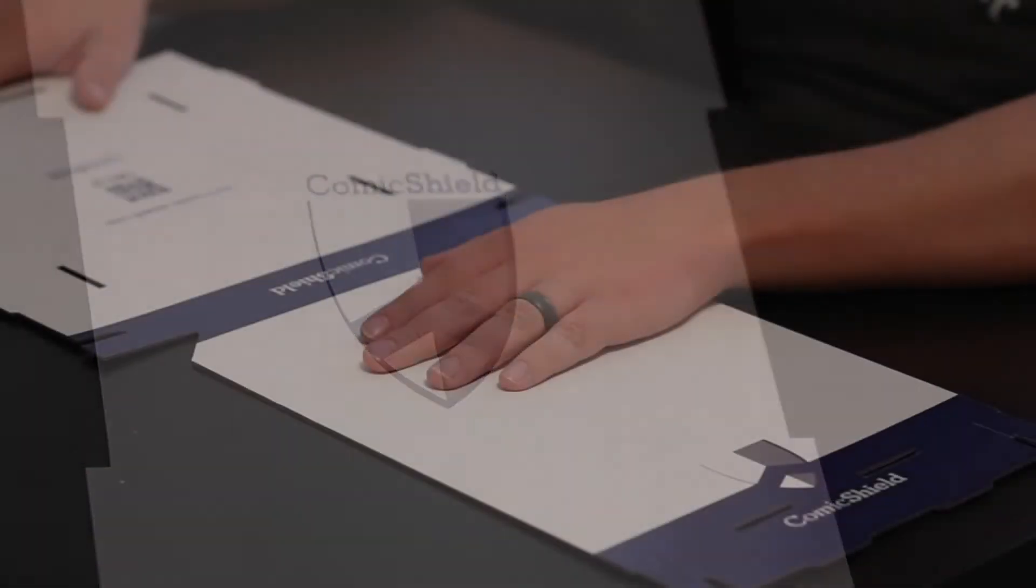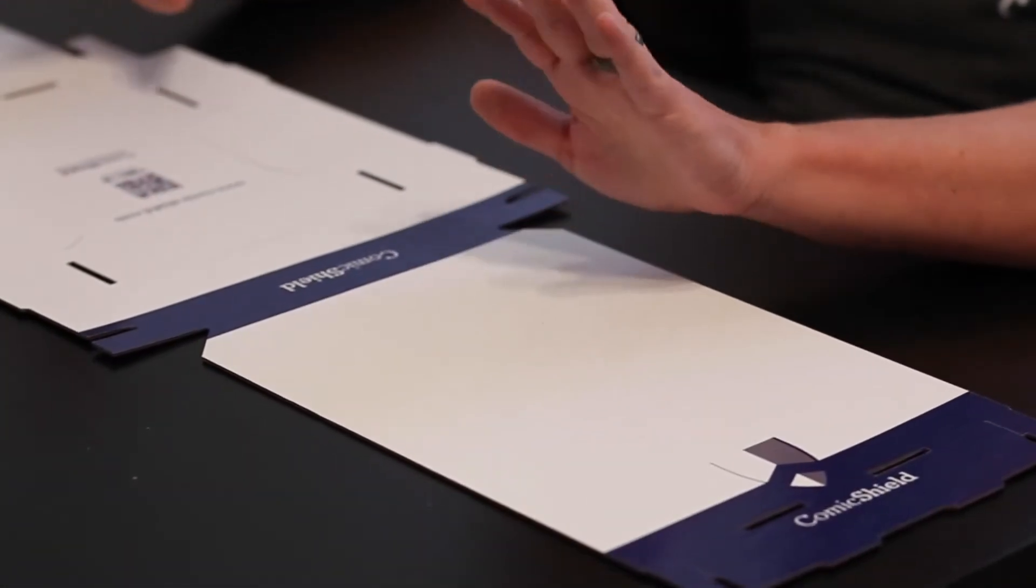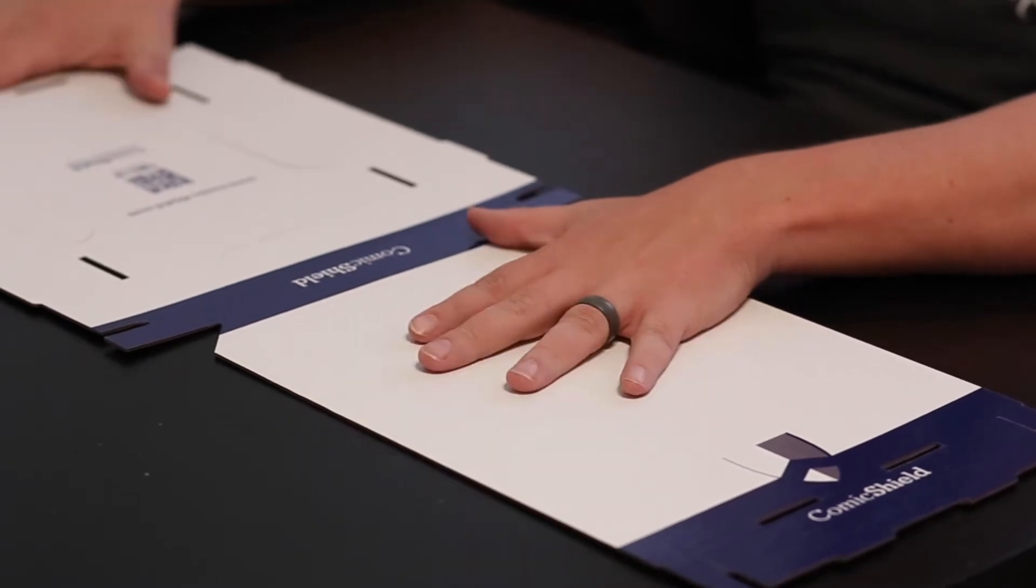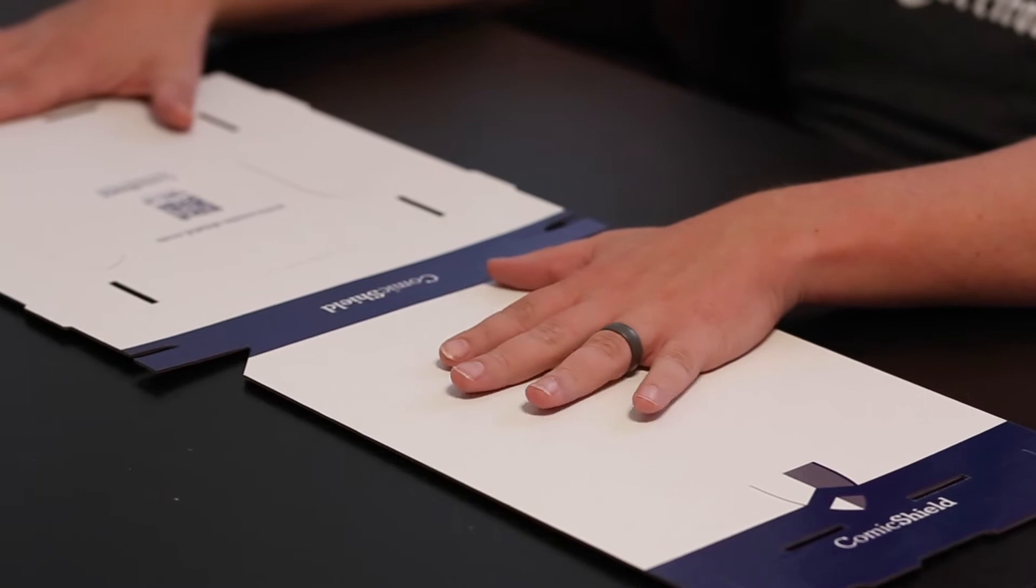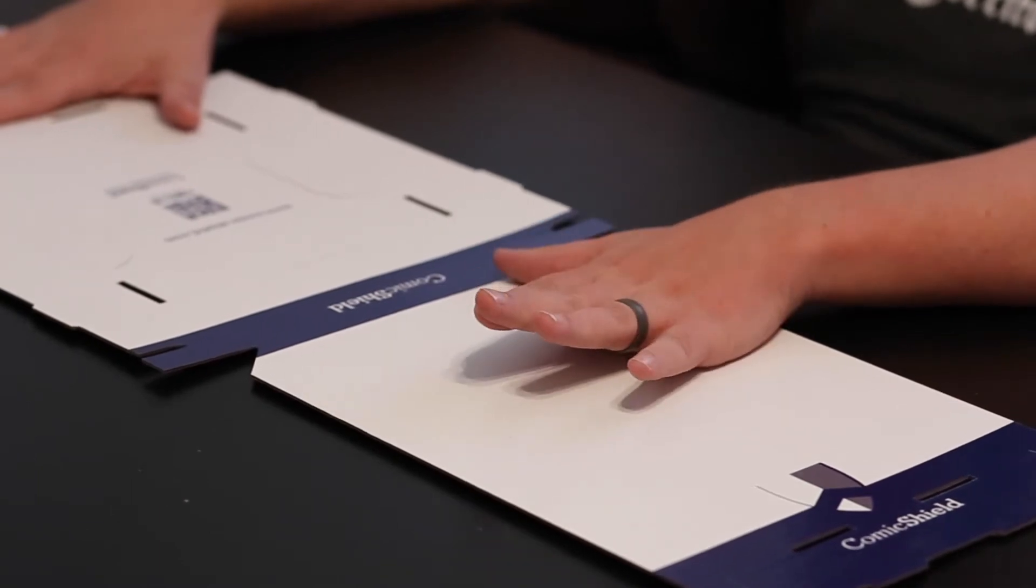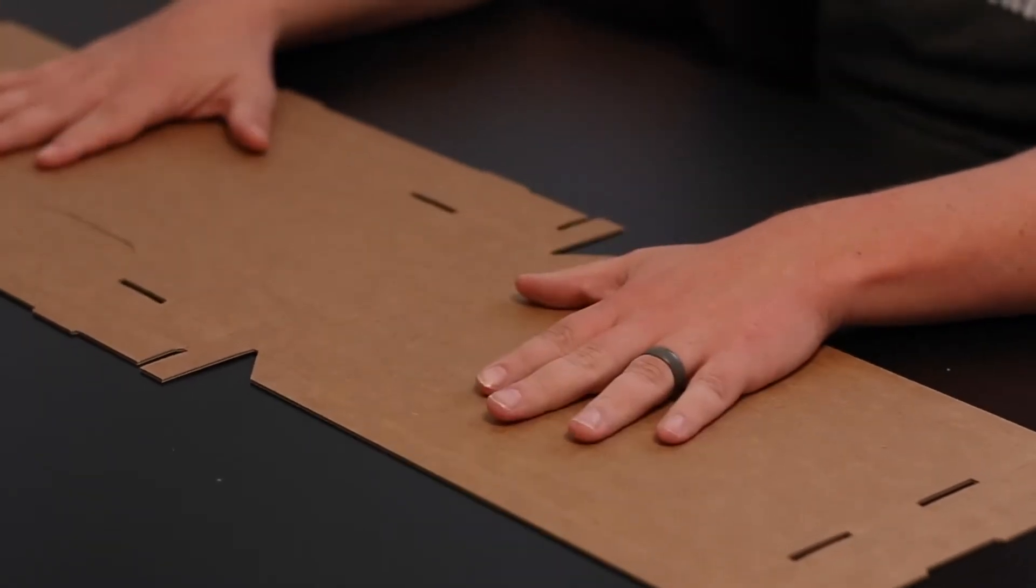Let's take a look at how to fold the comic shield container for raw comics. The first three to four may be a bit challenging if you haven't folded this type of box before. However, with a couple of hints and a few minutes of practice, you'll be folding these in a minute or less.